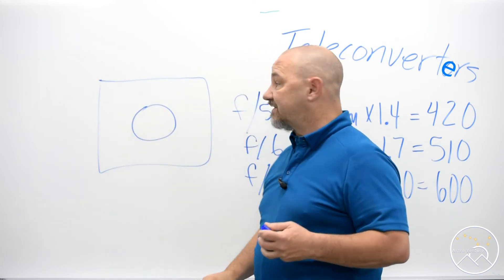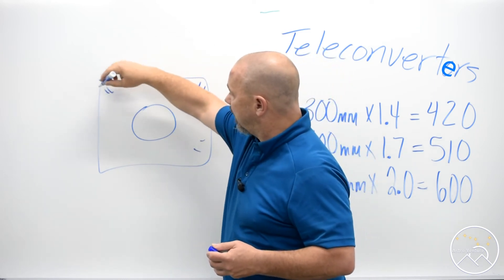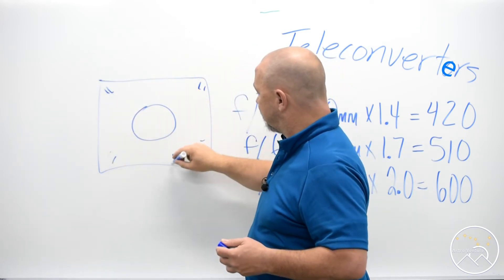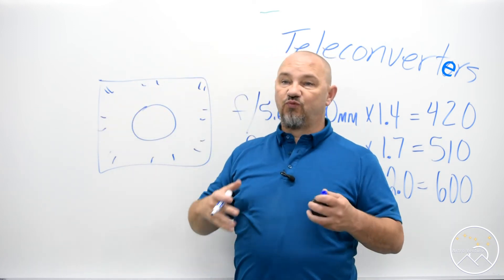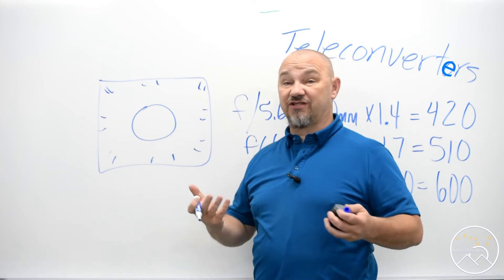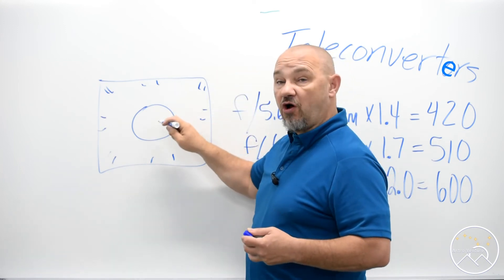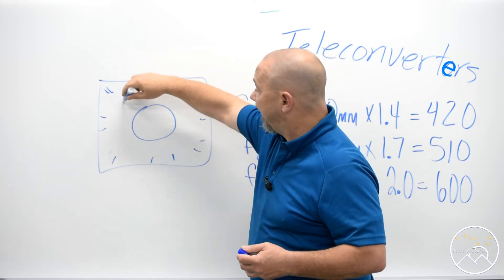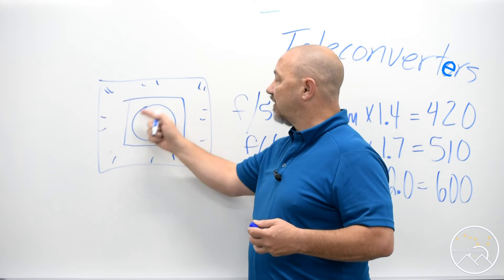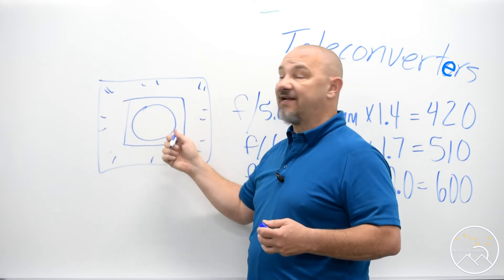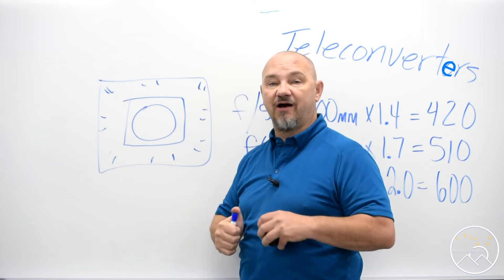And the reason being is that the teleconverter is going to cause this distortion out here at the edges to really be worsened over what it would normally be. And so ideally I go after small targets with the teleconverter and then I crop down so that way I have this relatively distortion free area in the center and I've cropped out what a teleconverter will mess up out on the outer edges.